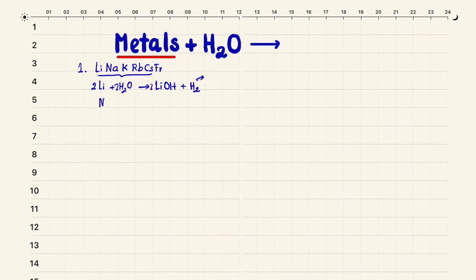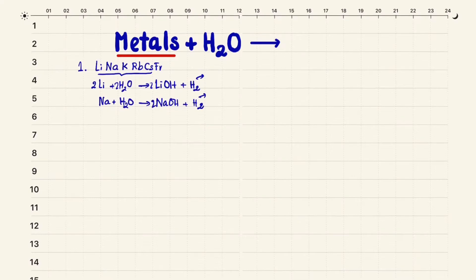Sodium also reacts with water. It produces sodium hydroxide and hydrogen gas — the hydrogen gas is liberated very quickly. We balance the equation: 2Na + 2H₂O → 2NaOH + H₂.